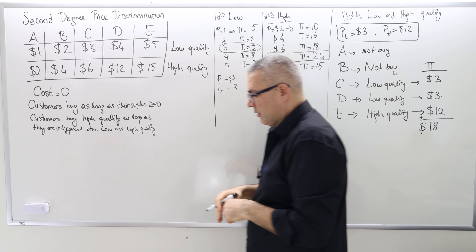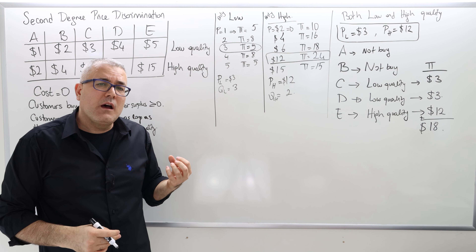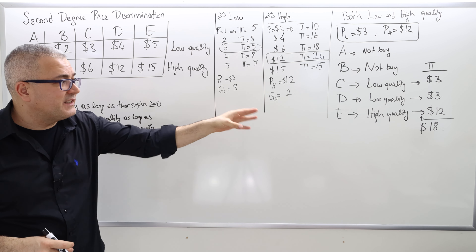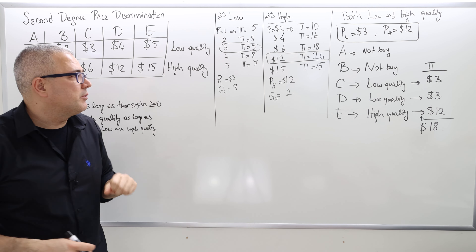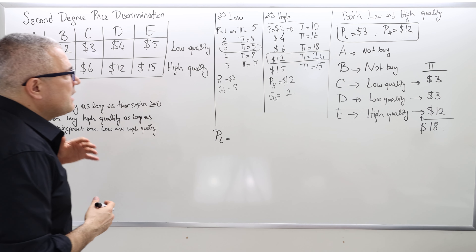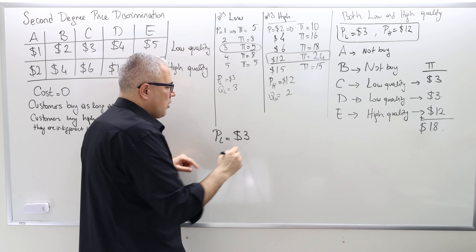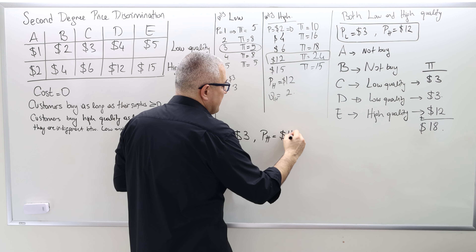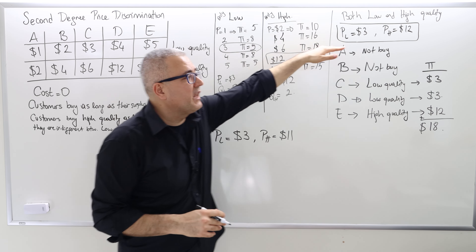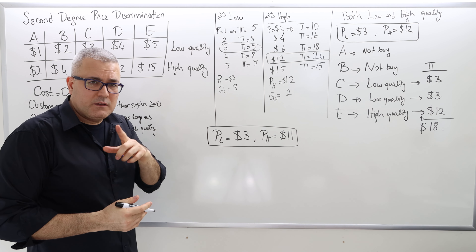The profit is $18. But can the monopolist do better than $18? The answer is yes. For example, suppose the monopolist charges $3 for low quality but $11 for high quality — slightly lowering the high quality price. What would be the monopolist's profit now?